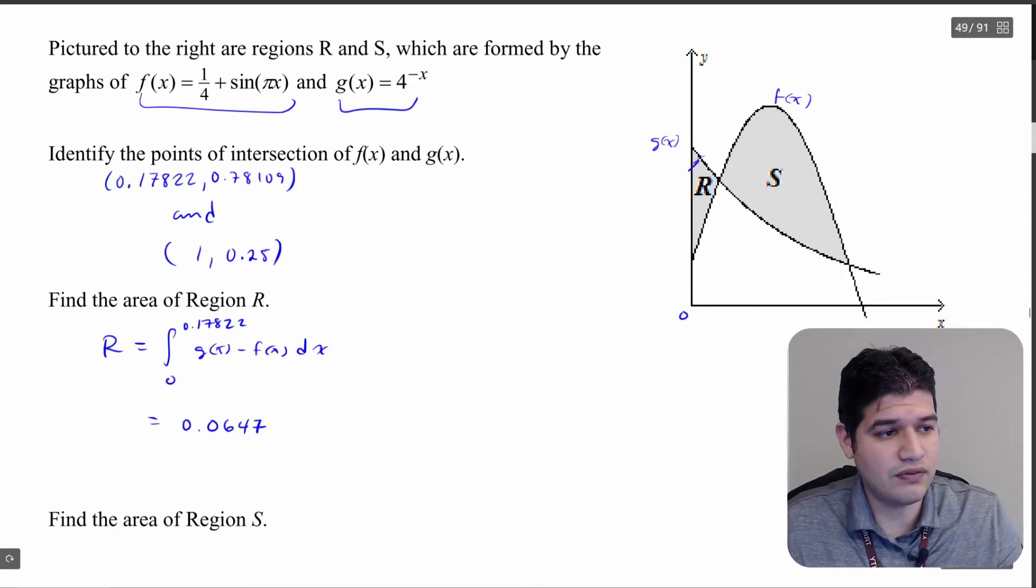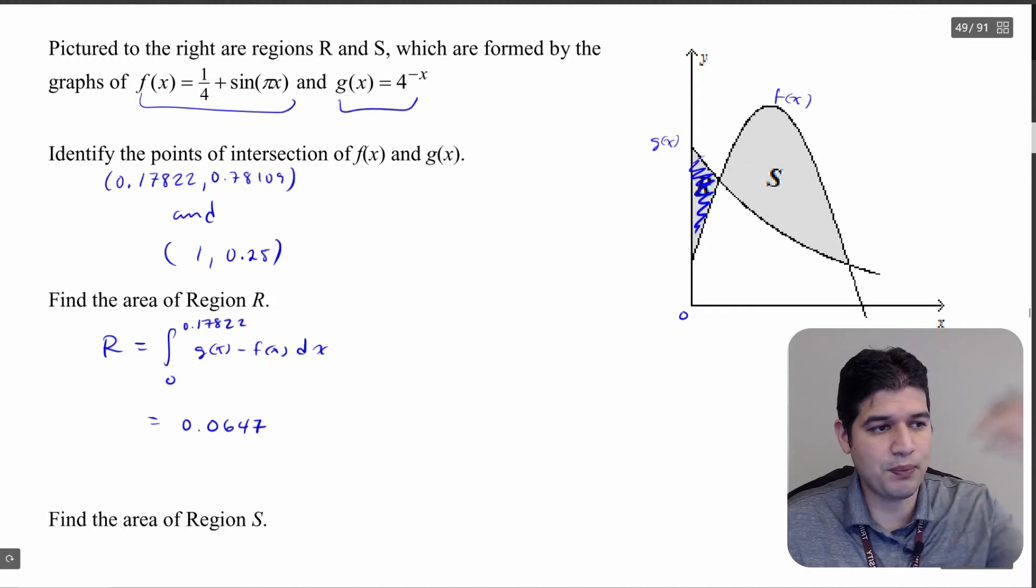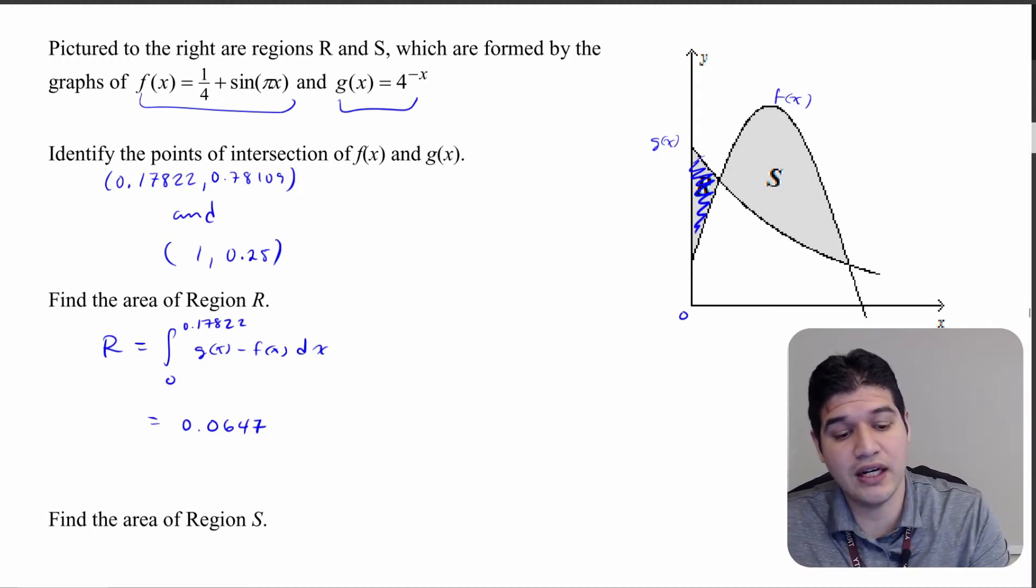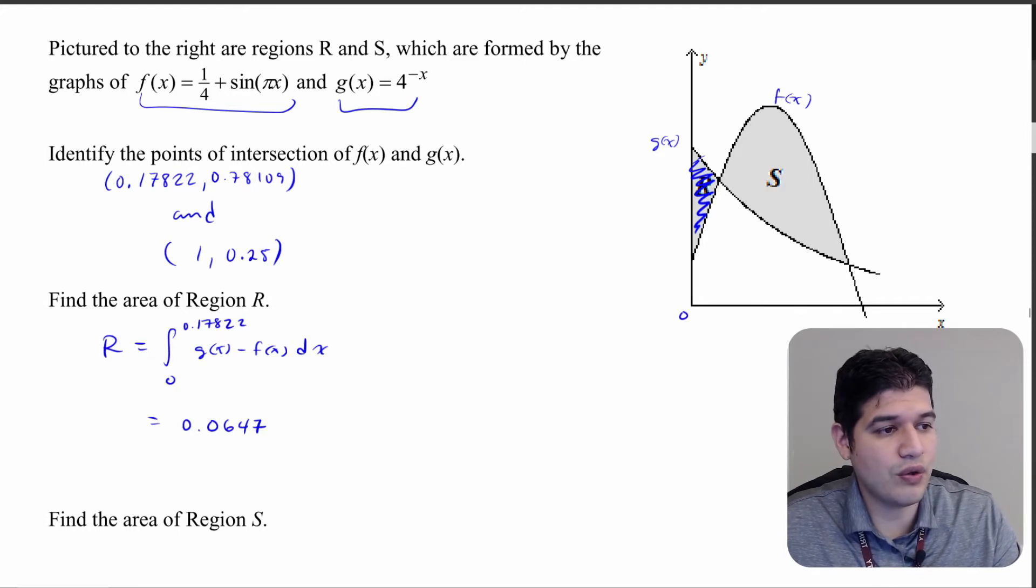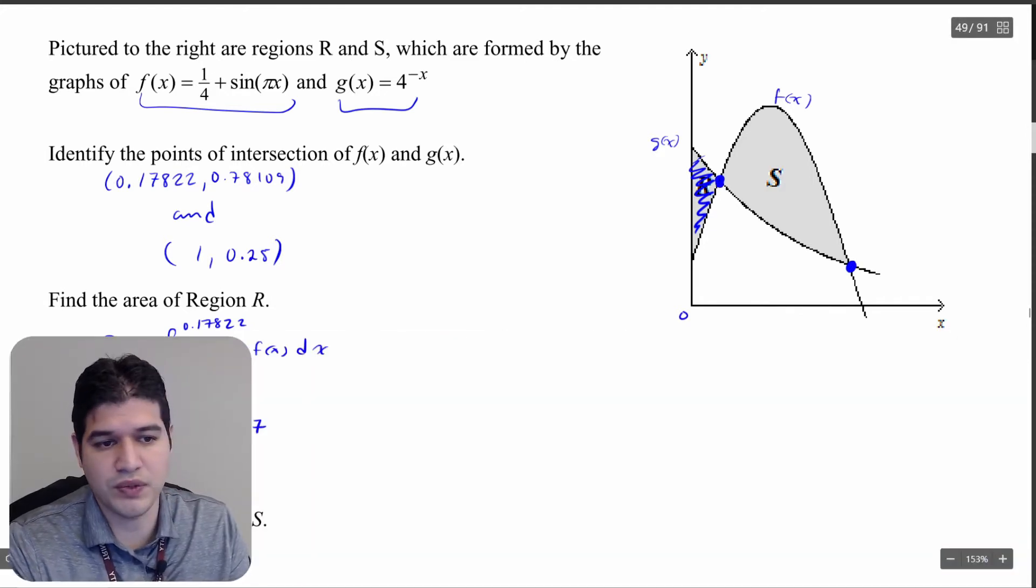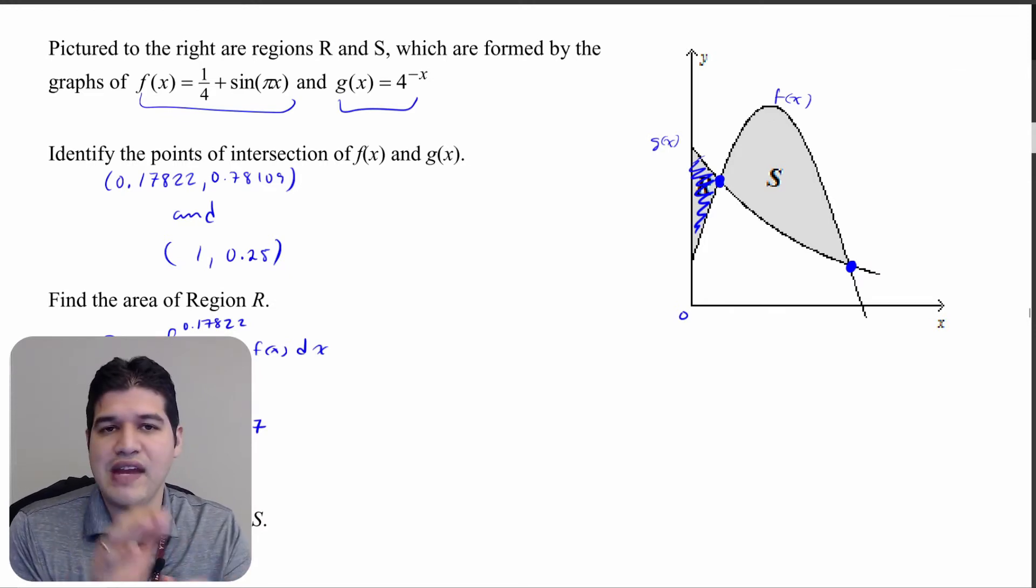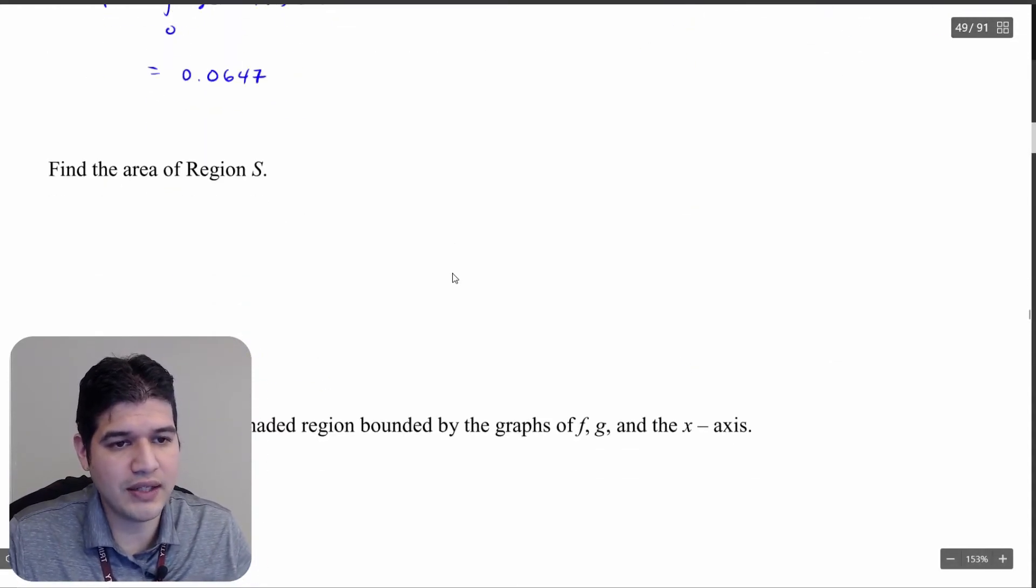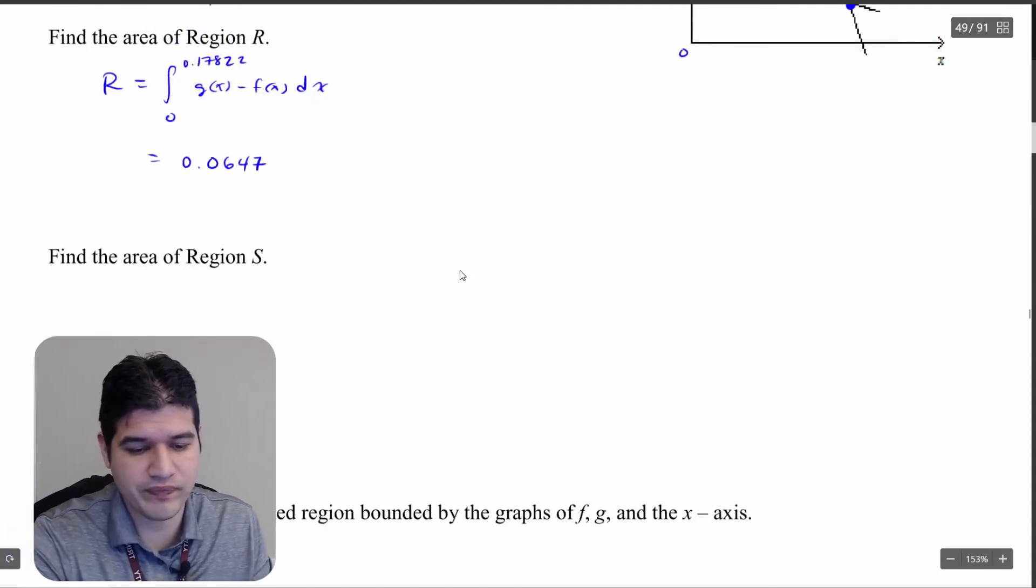So now what we want to do is find the area of region S. We're now going from this intersection point to this last intersection point which is 1. And we have a different upper and lower function. The upper function in this case is f of x. The lower function in this case is g of x. So I'm going to basically do it the exact same way. Let me write this out.